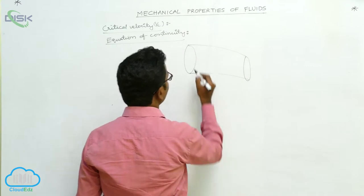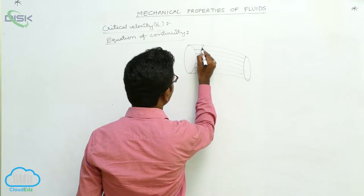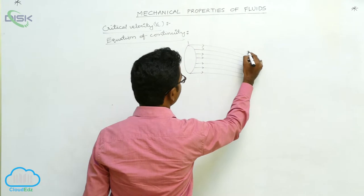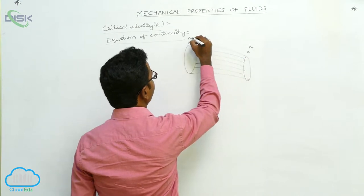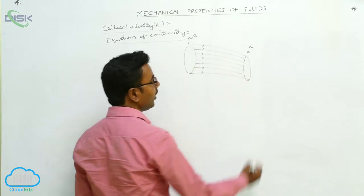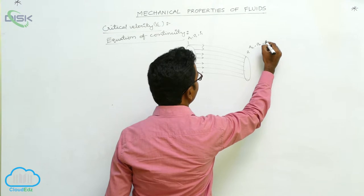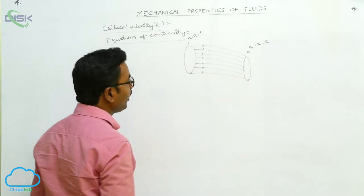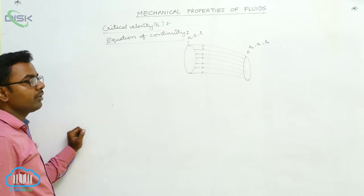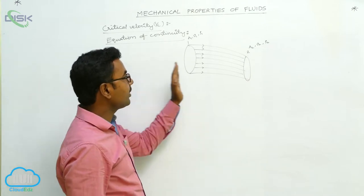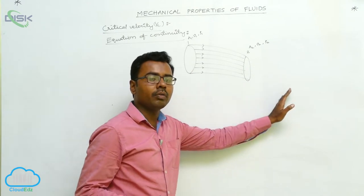Suppose this is a tube of flow, and these are streamlines. This is cross-section 1 and this is cross-section 2. At cross-section 1, the area is A1, velocity is V1, and density is Rho 1. At cross-section 2, the area is A2 and density is Rho 2. Here we apply the law of conservation of mass: how much mass of fluid enters the tube of flow in a particular time, the same amount of mass leaves the tube of flow in the same time interval.